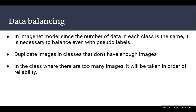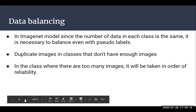While training, they also take care of data balancing. In the ImageNet model, each class is balanced. When using unlabeled data, the authors maintain that balance in every class — if any class has fewer images, they duplicate images in that class; if a class has too many images, they filter images according to some confidence value.